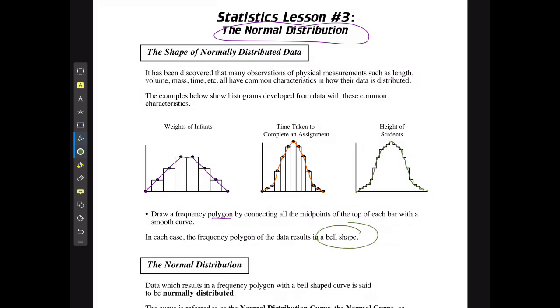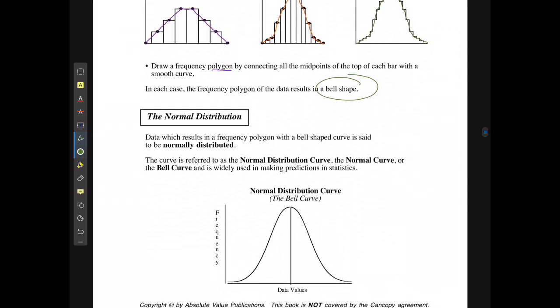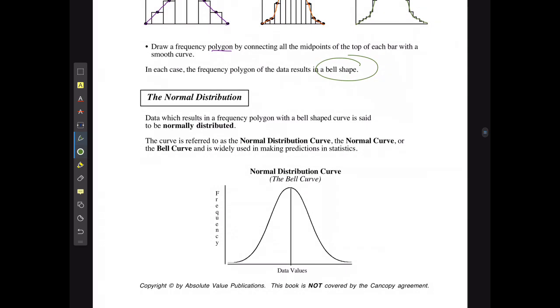In each case, the frequency polygon of the data results in a bell shape, which we typically refer to as the bell curve. Data which results in a frequency polygon with a bell-shaped curve is said to be normally distributed. The curve is referred to as the normal distribution curve, normal curve, or most commonly the bell curve. Here's an example where here's the average data and it should break down evenly going on either side.